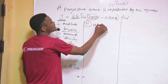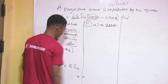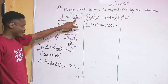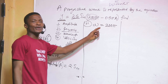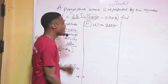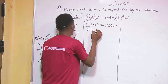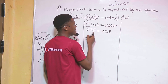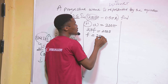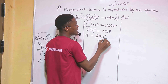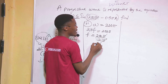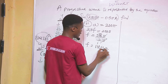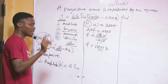Since ω equals 200π and ω equals 2πf, we have 2πf equals 200π. Making f the subject: f equals 200π divided by 2π. The π cancels and 200 divided by 2 gives 100. So the frequency of the wave is 100 Hertz.